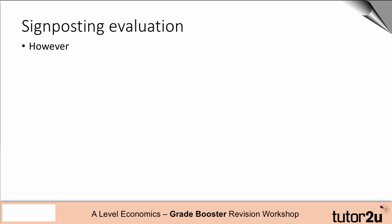The common one, the ubiquitous starting point, is 'however.' 'However, another view is...' — start with 'however' and you won't go far wrong. 'An alternative view is' is a good signpost to use, because providing you do have an alternative view, you can put a contrasting argument into your evaluative paragraph. I quite like 'alternative view.'